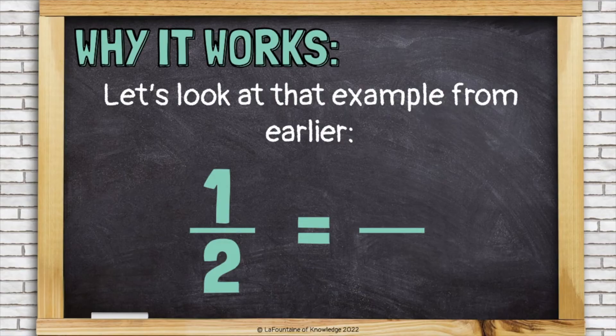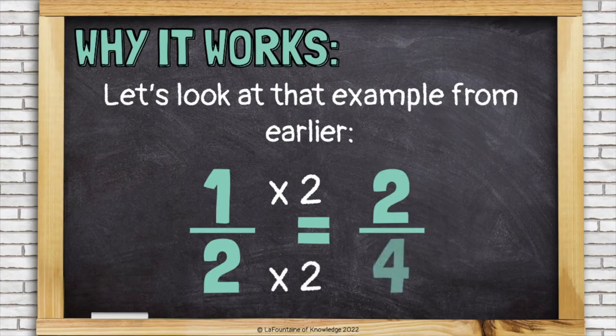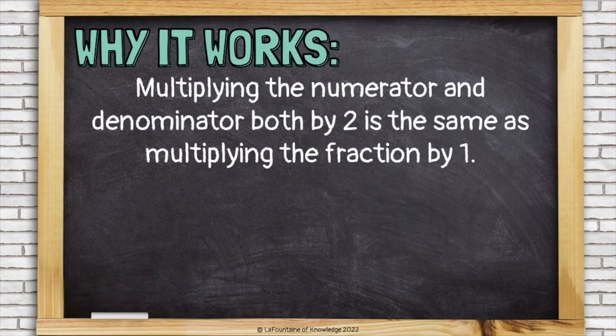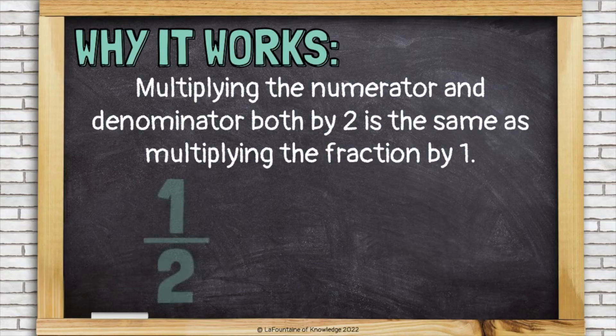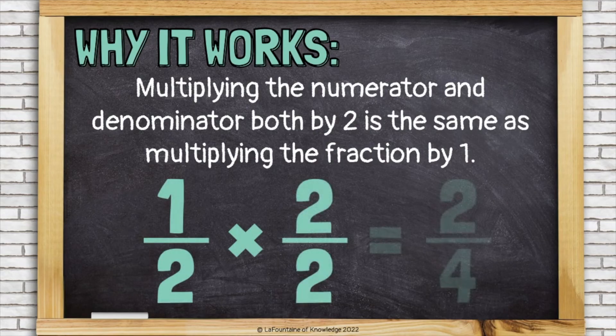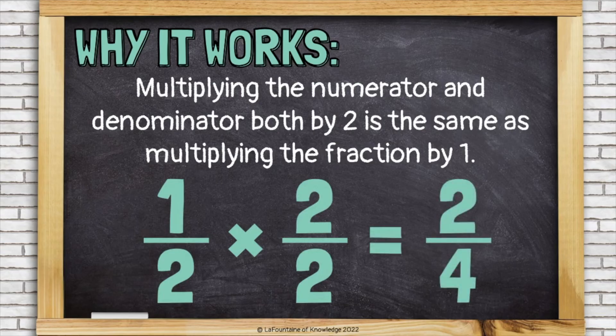Let's look at that example from earlier. We multiplied the numerator by two and the denominator by two to create an equivalent fraction. Multiplying the numerator and denominator both by two is the same as multiplying the fraction by one. I'll show you. One-half times two over two, which is what we did, equals two-fourths.